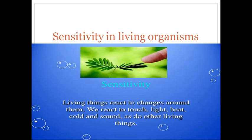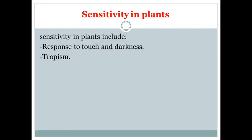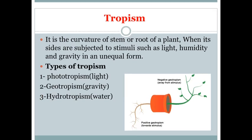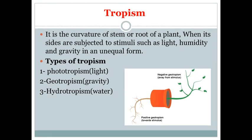Hello guys, today we're going to talk about sensitivity in plants. As you know, all living things respond to stimuli. Sensitivity in plants includes response to touching, darkness, and tropism. Today we're going to talk about tropism in detail. Tropism is the curvature of roots and/or stem of a plant when subjected to light, water, and/or gravity. The types of tropism are: phototropism, when the plant is subjected to light; geotropism, the effect of gravity on plants; and hydrotropism, the effect of water on plant growth.